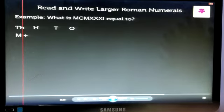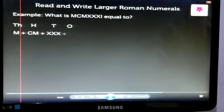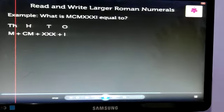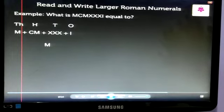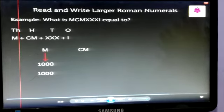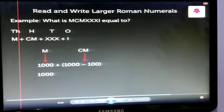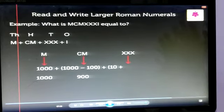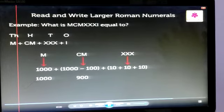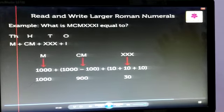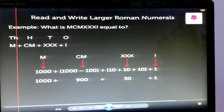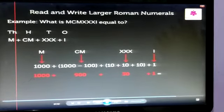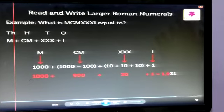100s, 10s, and 1s as M plus CM plus XXX plus I in order to solve it further. Now, let us write down the values of respective numbers. The value of M is equal to 1000. CM is 1000 minus 100, which is equal to 900. XXX is 10 plus 10 plus 10, which is equal to 30. And lastly, the value of I is equal to 1. On adding 1000 plus 900 plus 30 plus 1,